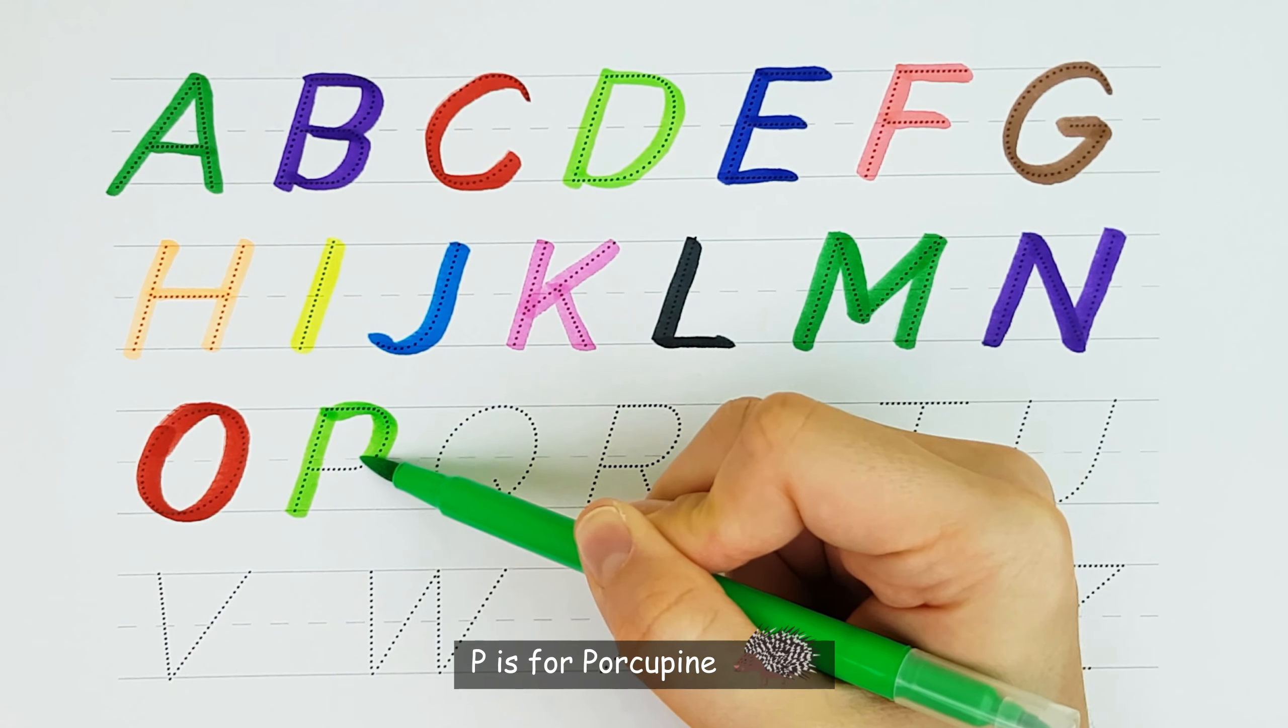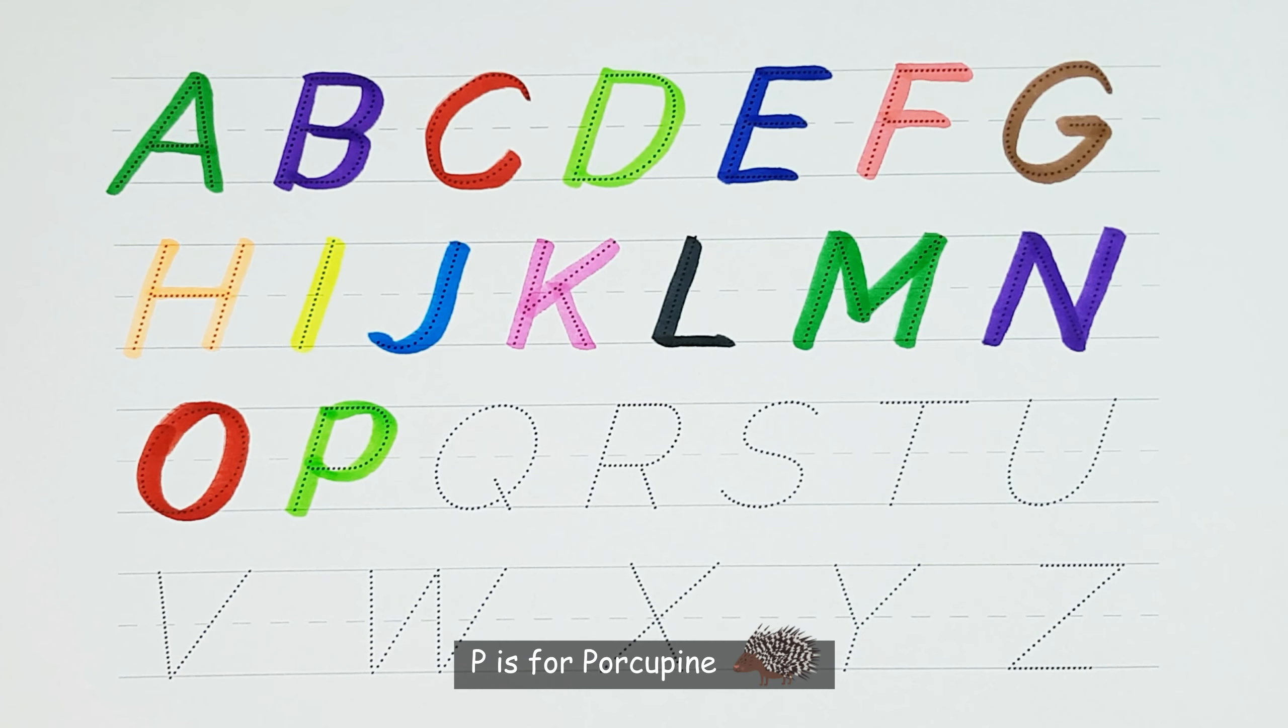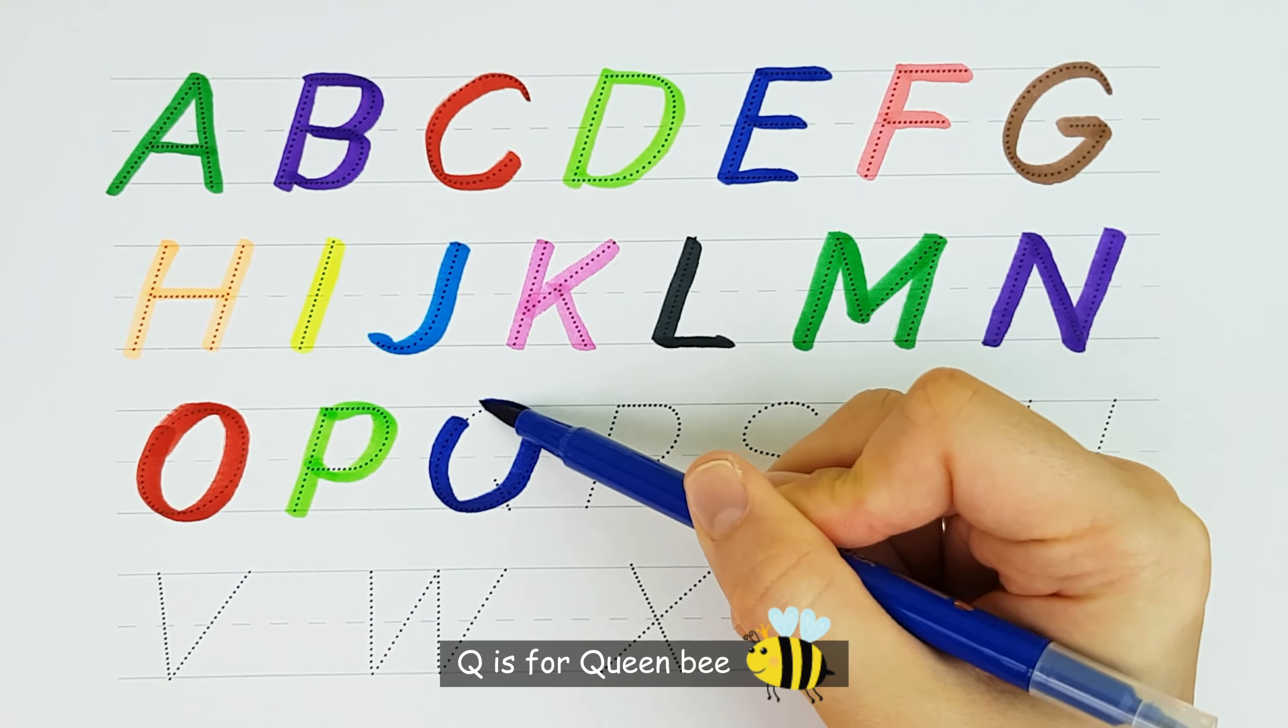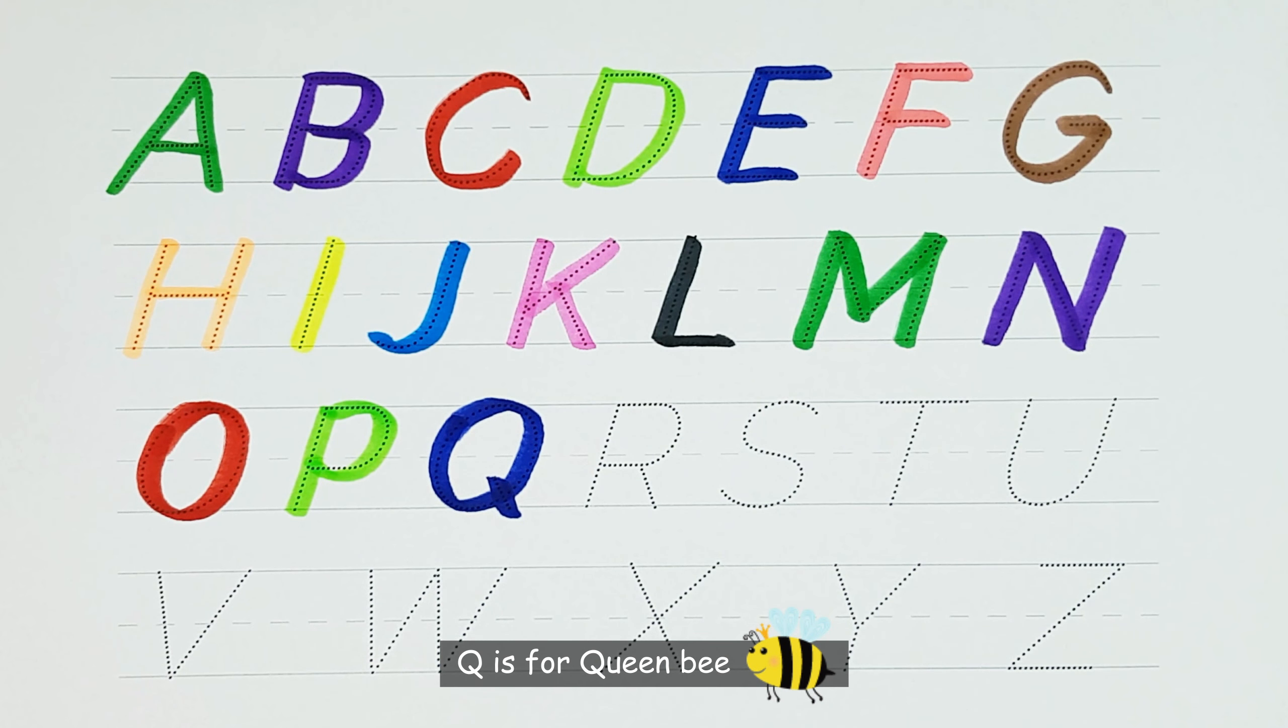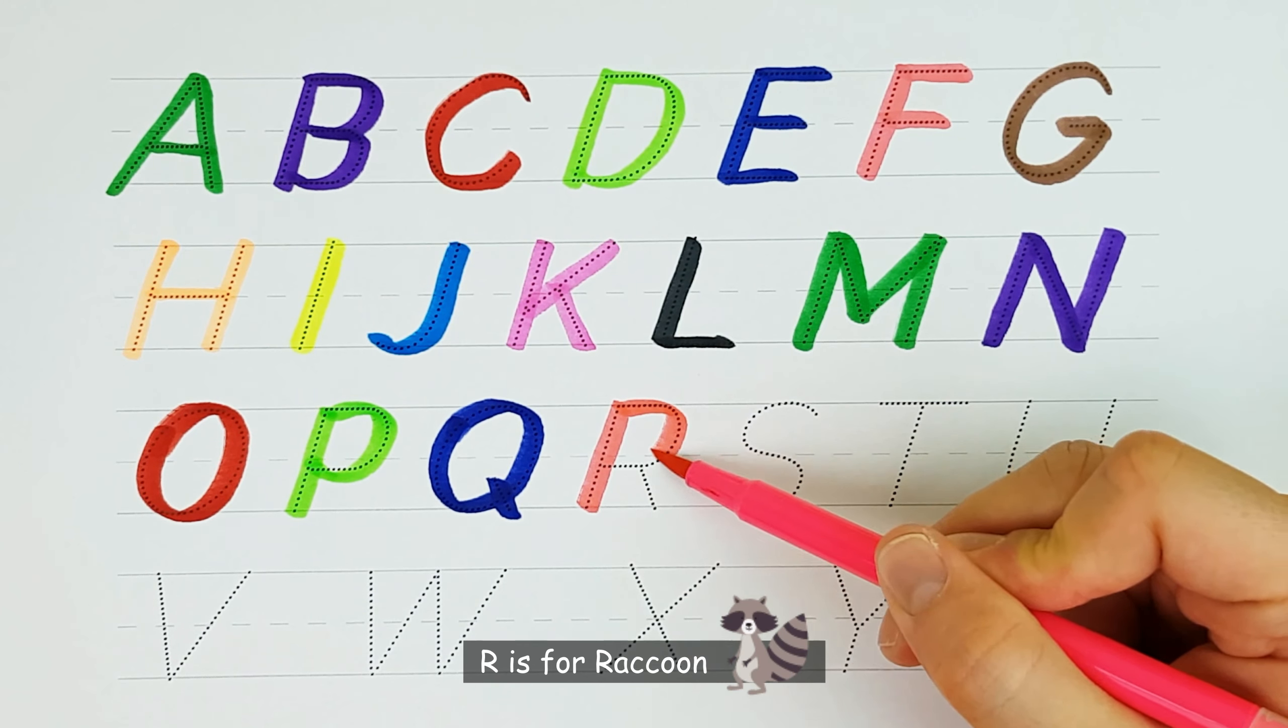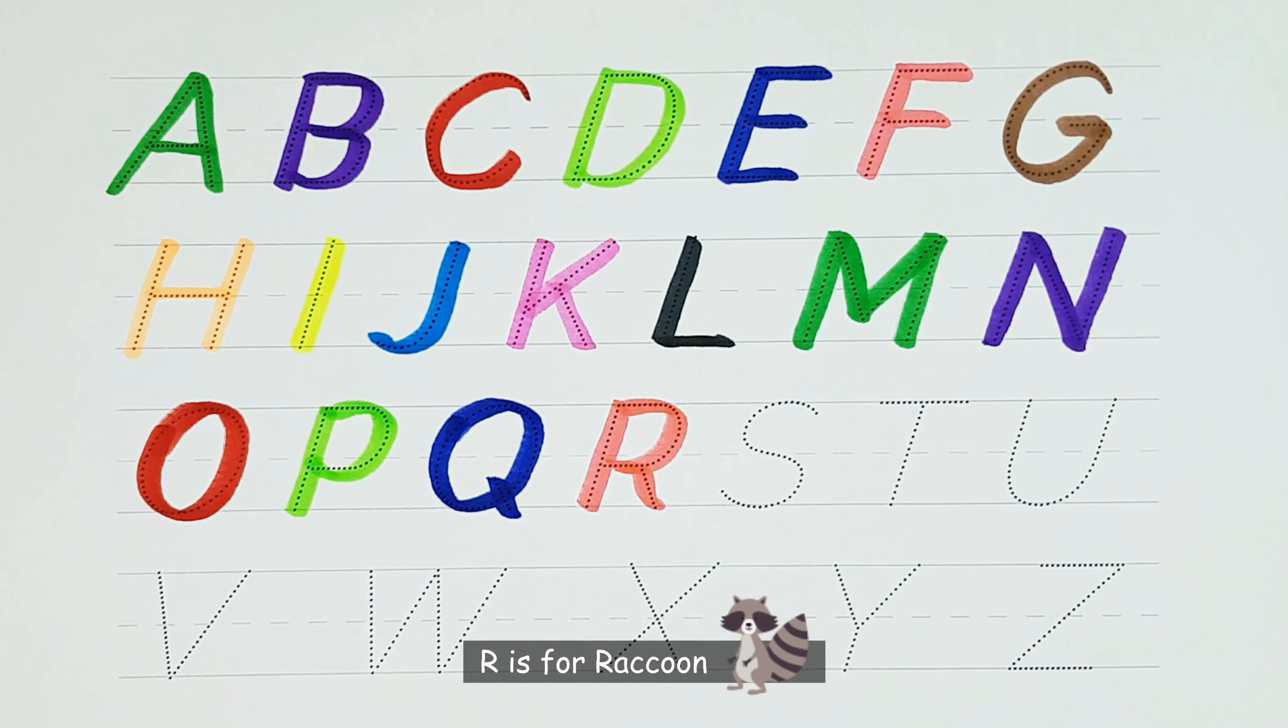P. P is for porcupine. Q. Q is for queen bee. R. R is for raccoon.